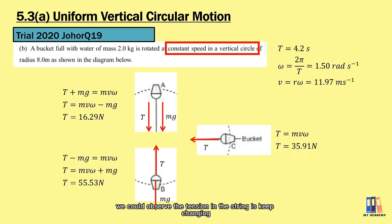So from here, we could observe the tension in the string keeps changing when the object is moving in the vertical circular path. It is minimum when the object is at the top of the circular path and maximum when it is at the bottom.